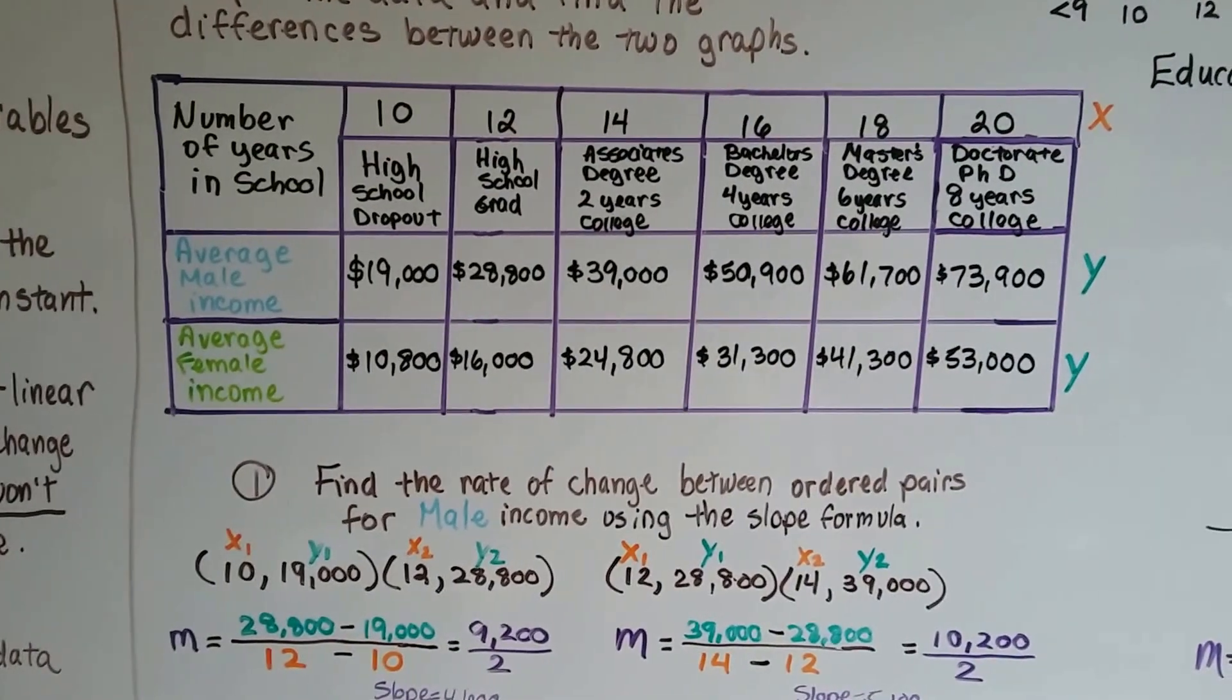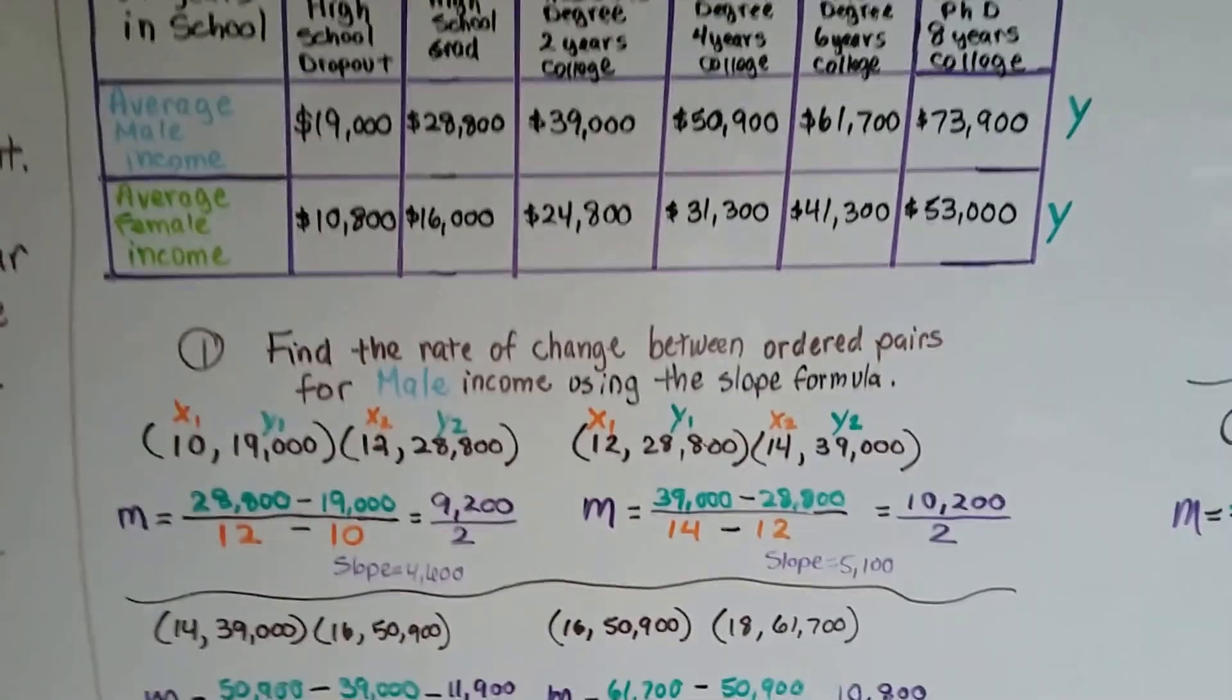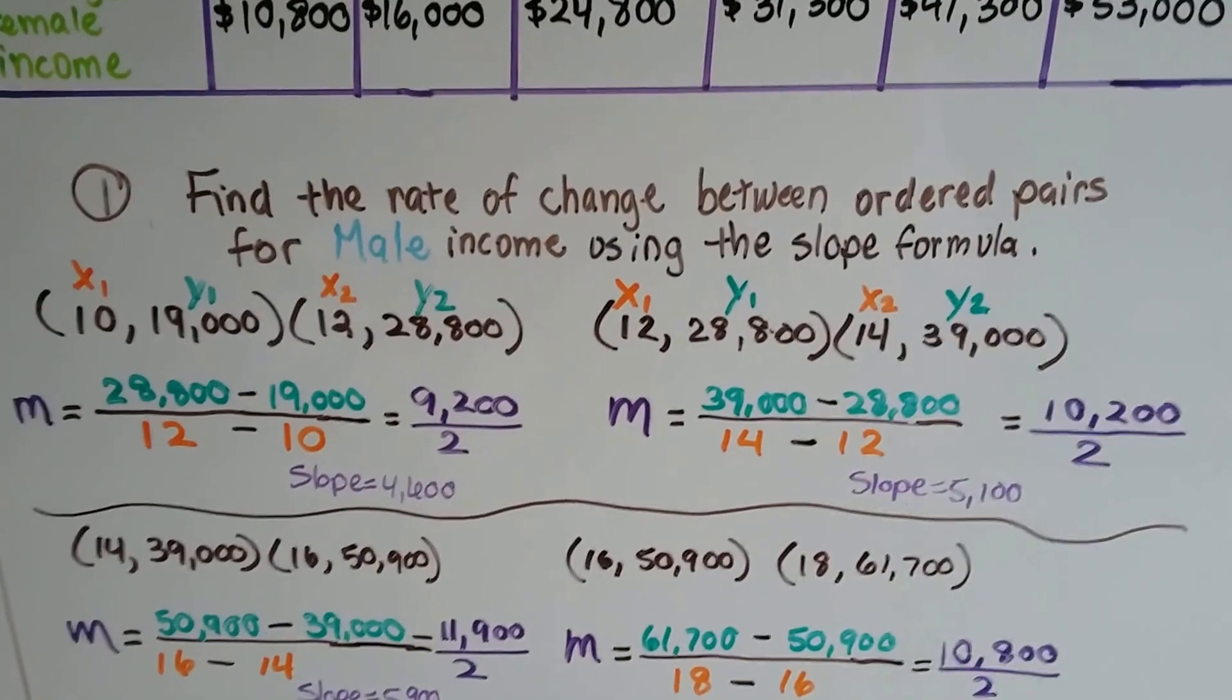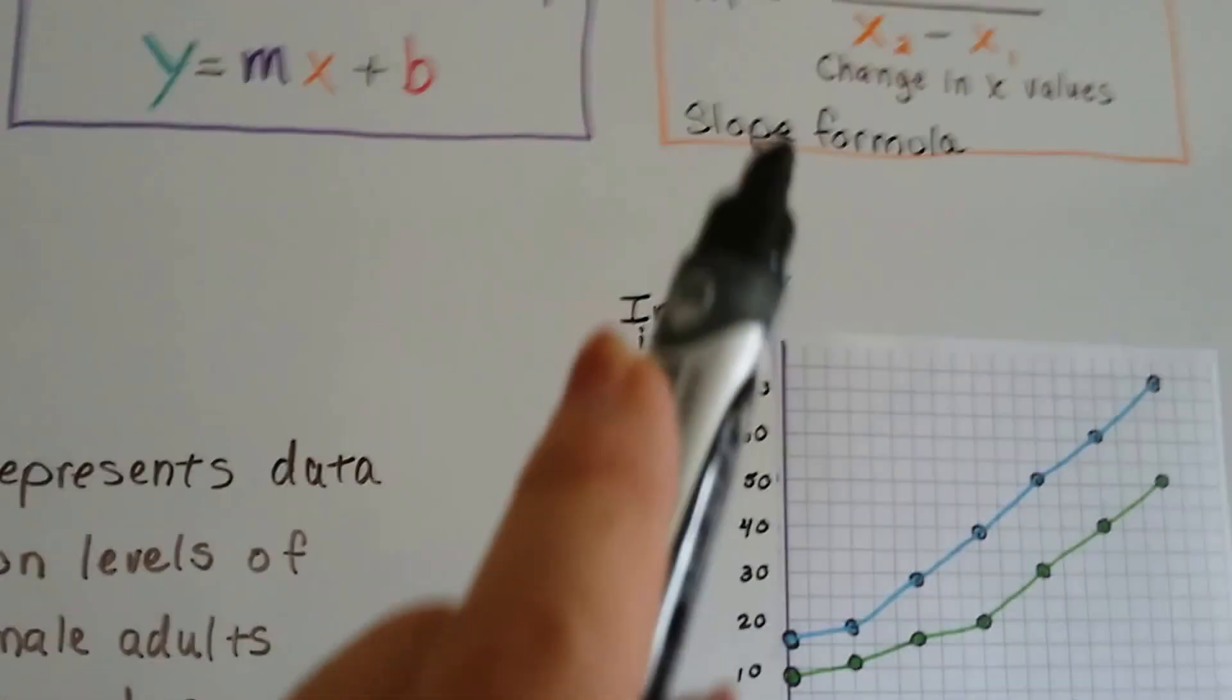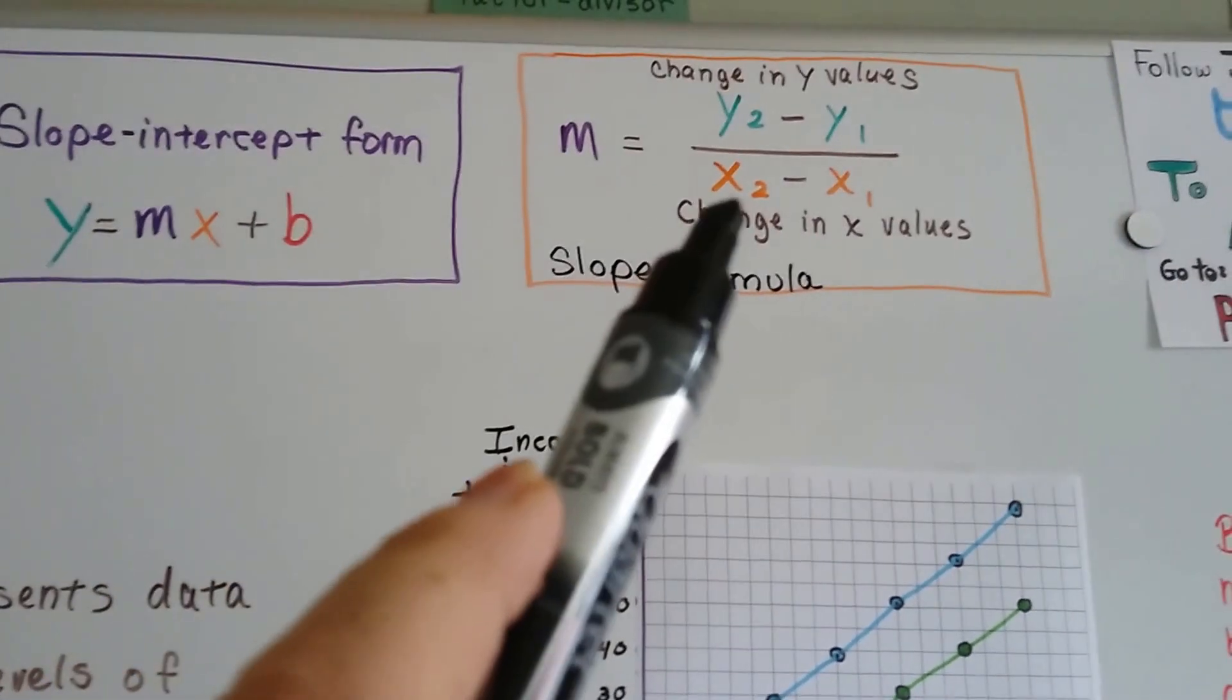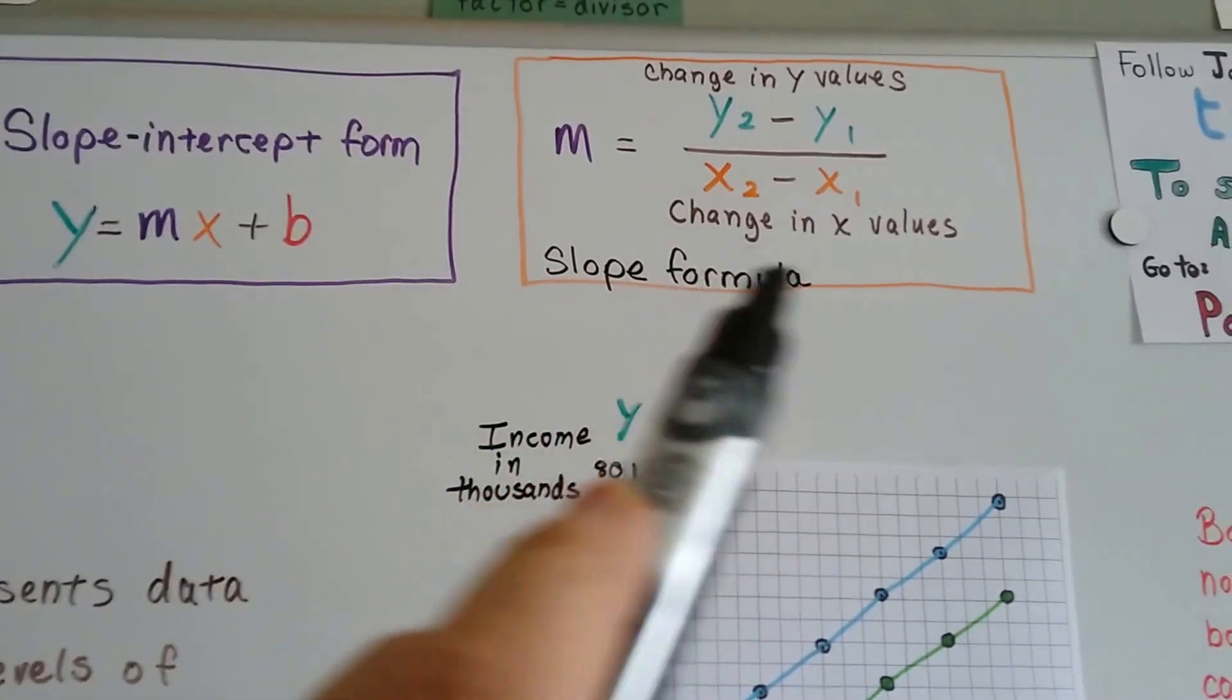Here's our table with the number of years in school, the average male income, and the average female income. We need to find the rate of change between the ordered pairs for male income using the slope formula. Remember the slope formula? We have to find the change in Y values over the change in X values, so Y2 and X2 are on this side, and we subtract Y1 and X1.